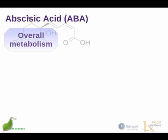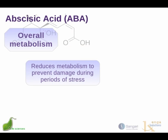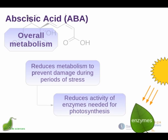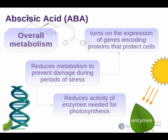Abscisic acid has overall metabolic effects as well. In particular, it can reduce plant metabolism to prevent damage during periods of stress. It reduces the activity of enzymes needed for photosynthesis, for example, and it may turn on the expression of genes that code for proteins that protect cells. One can imagine this effect being active in many native highveld plants during cold, dry conditions.